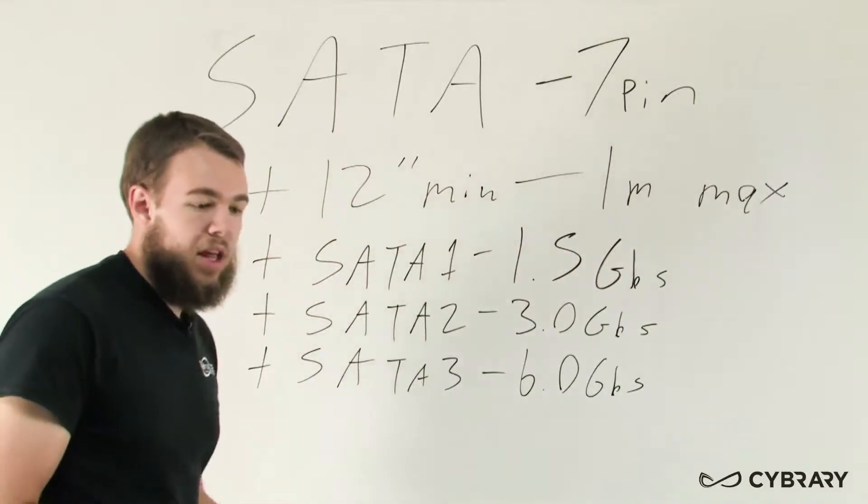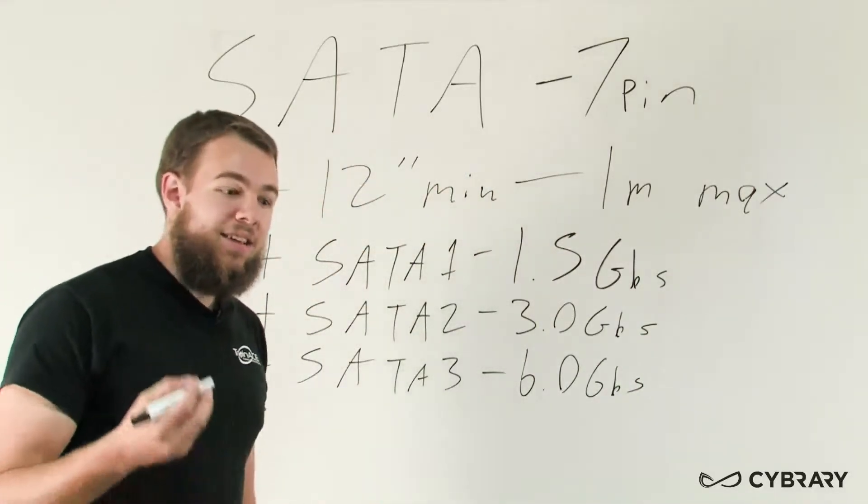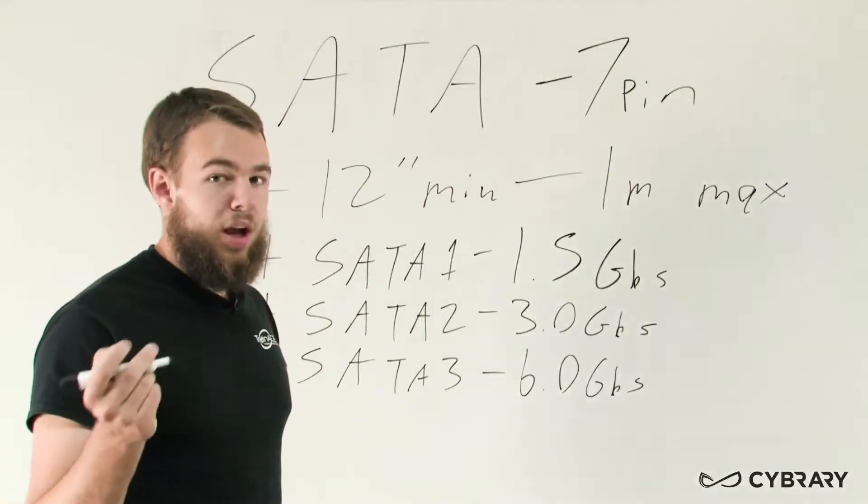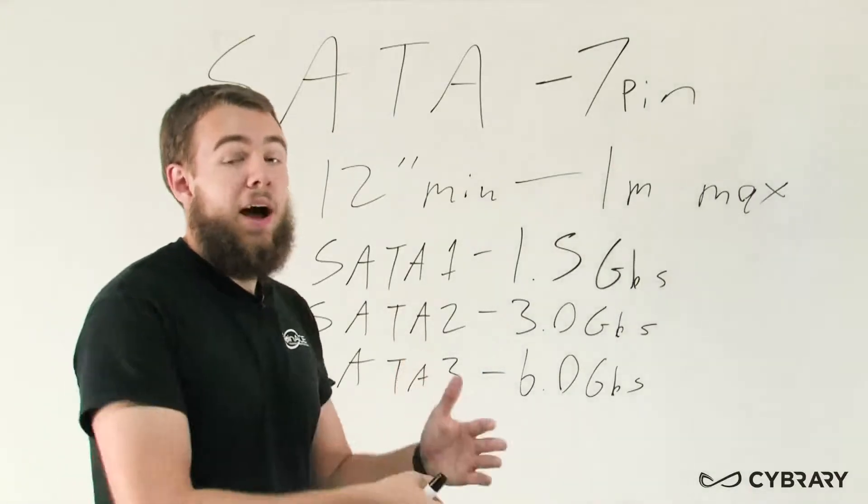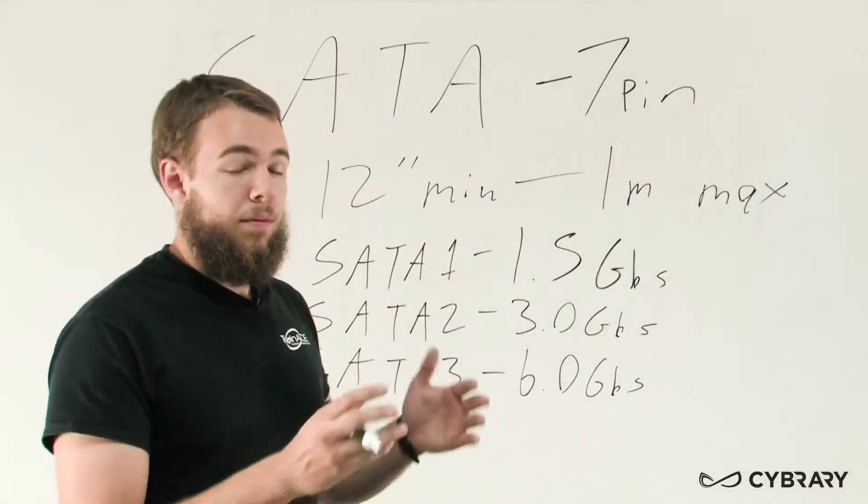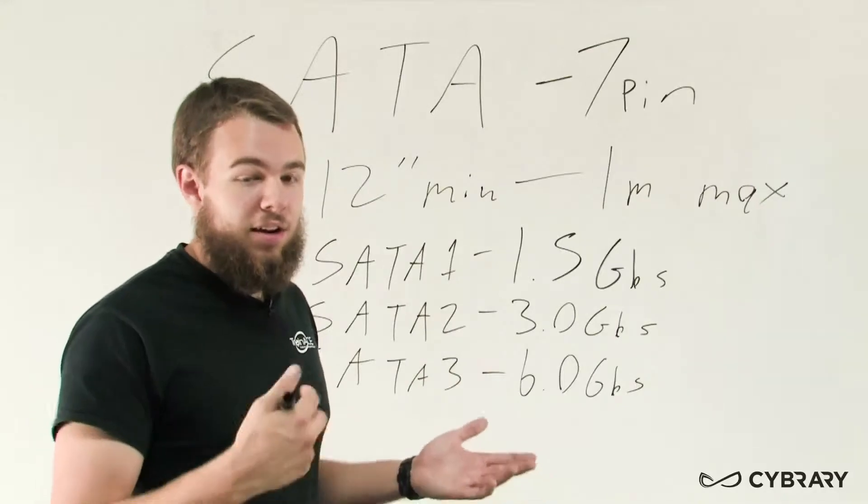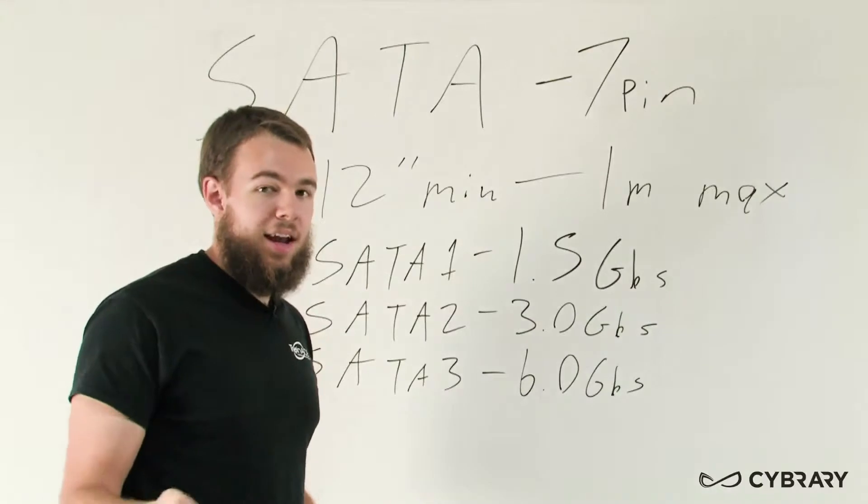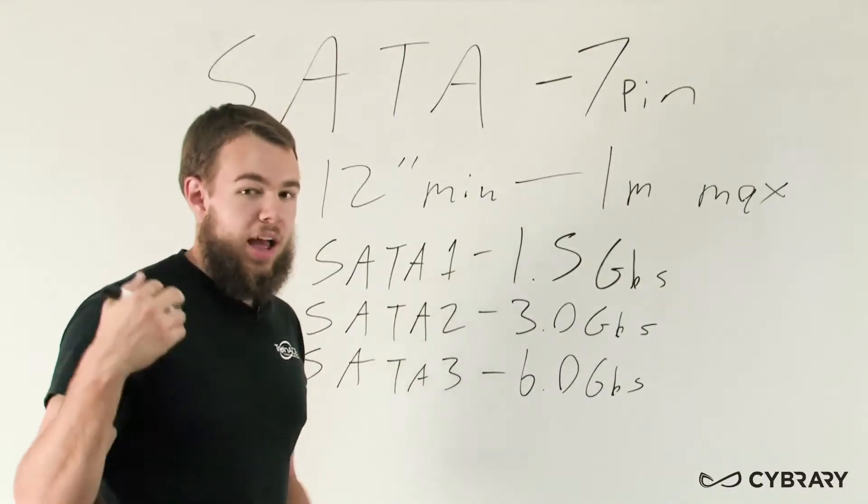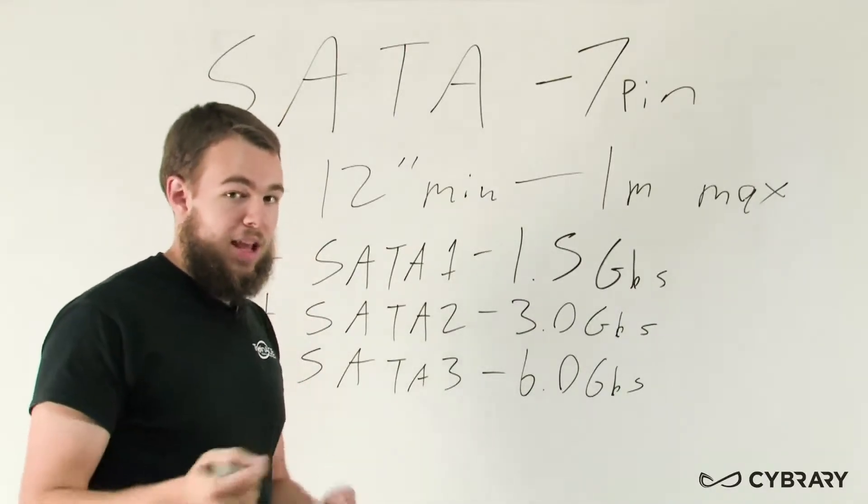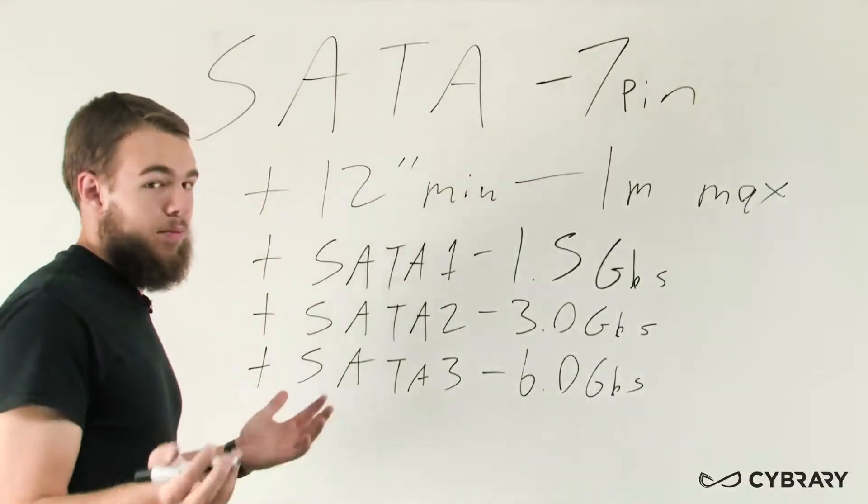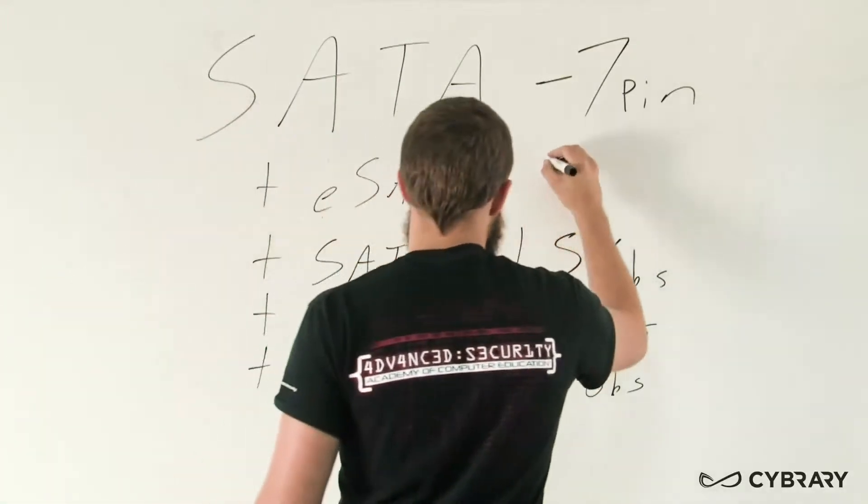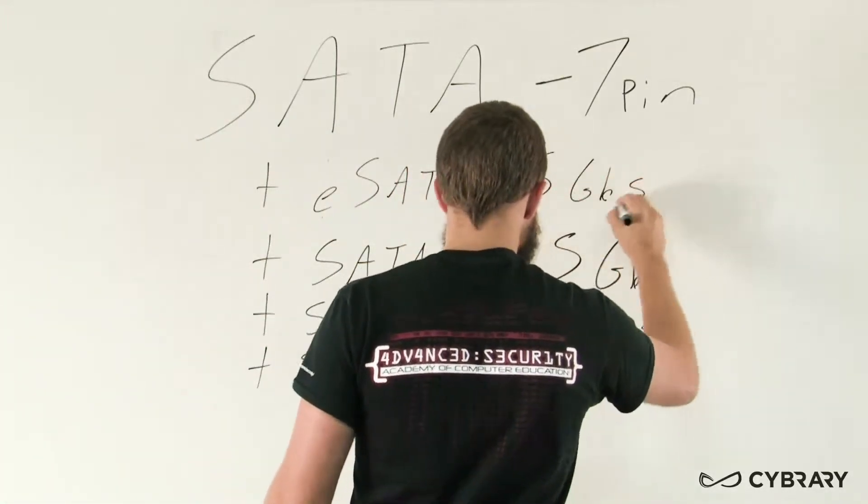We have one more type of SATA connection called E-SATA. The E stands for external and allows us to connect SATA connections to the outside of our computer. For example, if we have a laptop and need to connect an external drive, some external hard drives have E-SATA connections. Rather than using a standard USB connector, we plug in the E-SATA connection, essentially running a SATA cable from our external drive into our computer. E-SATA transfers at about 5 gigabits per second.